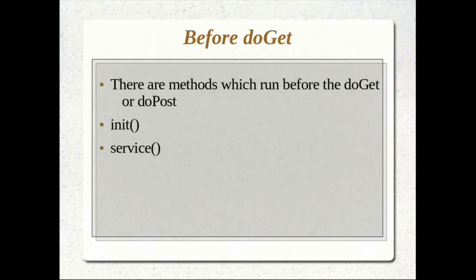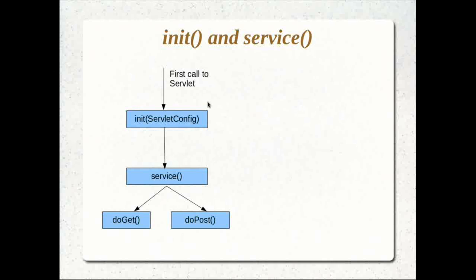The init method happens only once in the servlet's lifetime. The service method happens for each and every request the servlet object handles. These methods come to us because we extend the HttpServlet class — they are inherited methods. On the first call to a servlet, if the servlet object doesn't exist yet, the object has to be created. When Tomcat creates the object, it calls the init method of that object. The init method takes a parameter called the ServletConfig.